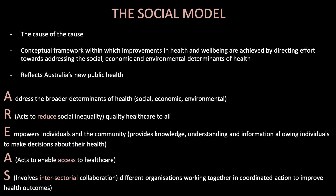There are five areas of the social model we look at, using the acronym AREAS. A — address the broader determinants of health, looking at social, economic and environmental factors. R — acts to reduce social inequality, ensuring quality health care is available for all. E — empowers individuals and the community by providing knowledge, understanding and information that allows individuals to make good decisions about their own health. A — acts to enable access to health care. S — involves intersectorial collaboration, where different organisations work together in coordinated action to improve health outcomes.